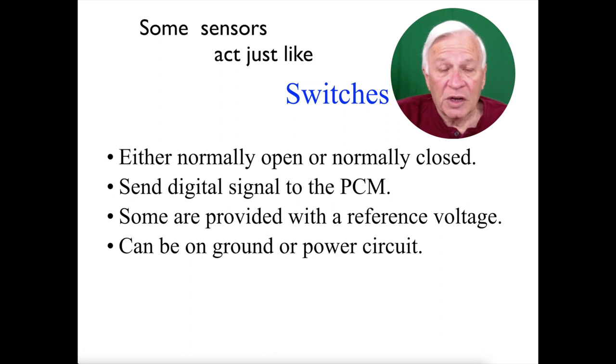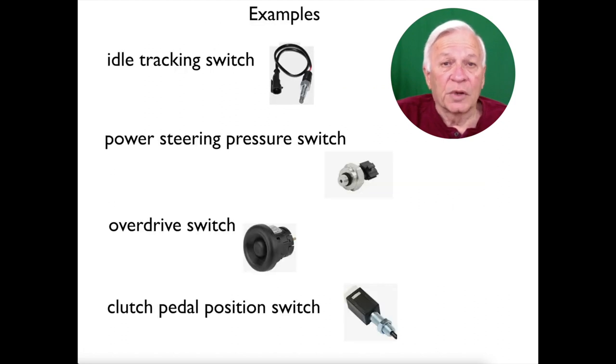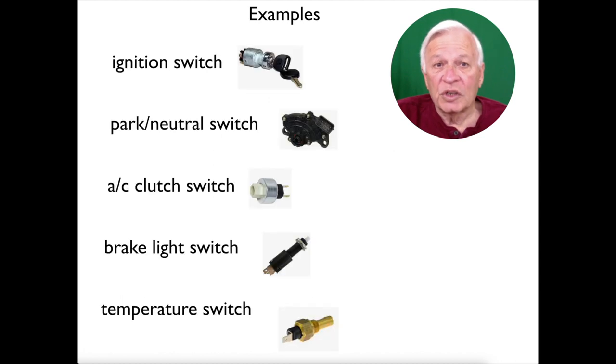Some sensors are just like switches, either normally open or normally closed, and they send a digital signal to the PCM. Some are provided a reference voltage and some can be ground or power circuits. Some examples are idle tracking switches, power steering pressure switch, overdrive switch, clutch pedal position switch, ignition switch, park neutral switch, AC clutch switch, brake light switch, and temperature switch, and more.